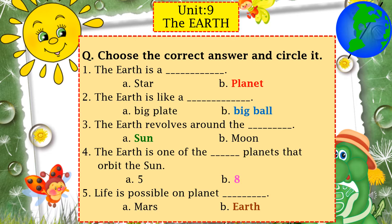You have 10 sentences and for each sentence you have two options. You have to choose the one correct option out of two. Read the sentence carefully, read the options given, and then choose the correct answer. Sentence number one: the earth is a dash. Option A: star. Option B: planet. The earth is a planet — well done, so you have to choose planet.